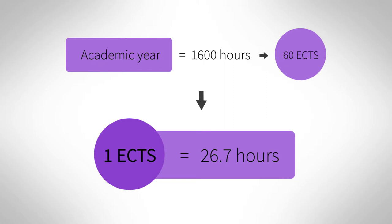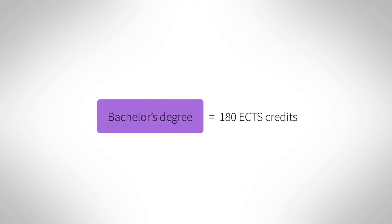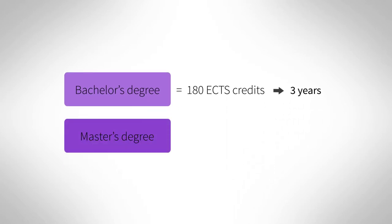Study time allocations are usually calculated in round numbers, so 27 hours is one credit. A bachelor's degree in many countries equals 180 ECTS credits and should be completed in three years. A master's degree is usually 120 ECTS credits and should be completed in two years. For individual learners, however, the actual time spent achieving the learning outcomes may vary.